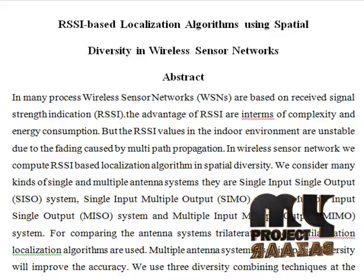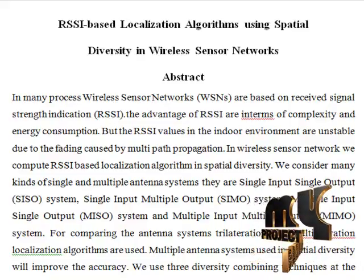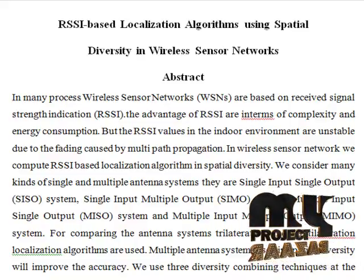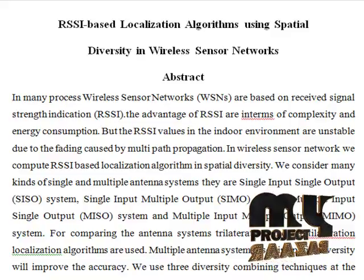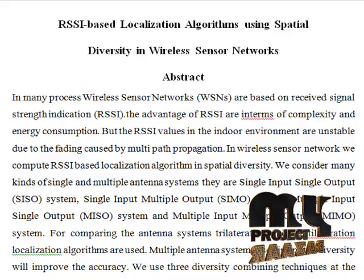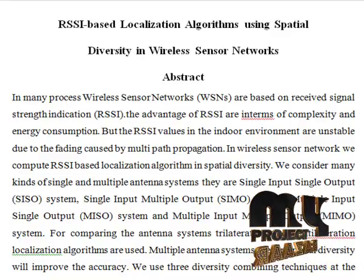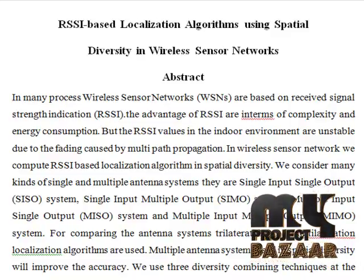In wireless sensor network we compute RSSI based localization algorithm in spatial diversity. By comparing both algorithms, multilateration algorithm presents better results compared with the trilateration algorithm. At last we find that MRC performs the best and SC is the worst.